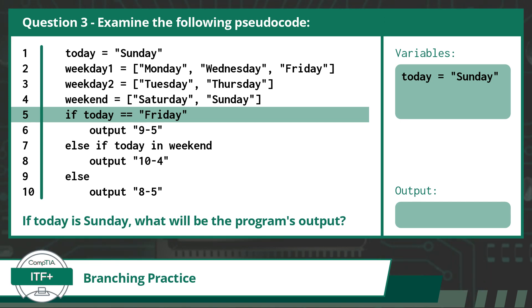Okay, back to the question at hand. The variable today, which is currently set to Sunday, is not equal to Friday, so this statement evaluates to false. This causes us to skip line 6 and move on to the else if branch on line 7. Here our conditional statement is checking if the value of today, which is currently set to Sunday, exists in the container weekend. Well, weekend contains the values Saturday and Sunday. So yes, Sunday is in the container weekend, and our statement will evaluate to true.